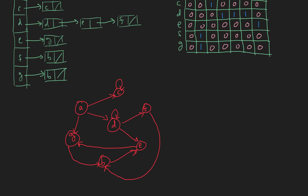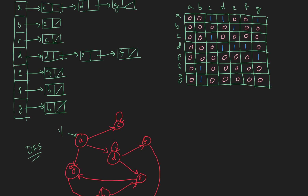Let's do depth-first search on this, just for some practice. We're going to start from A — signify starting with time 1. We're going to take this in the order of our list, so C is going to be the first place that we go. So let's go along C — we've discovered this at time 2. Now C has a self-loop, so it's already been discovered and we're done with this one at time 3.